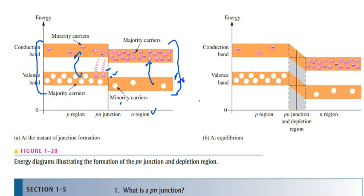When the P-N junction is formed, the electrons move from the conduction band into the nearly empty conduction band of the P-region, and the holes move in the valence band. On one side are electrons and on the other side are holes; they recombine and form the depletion region.